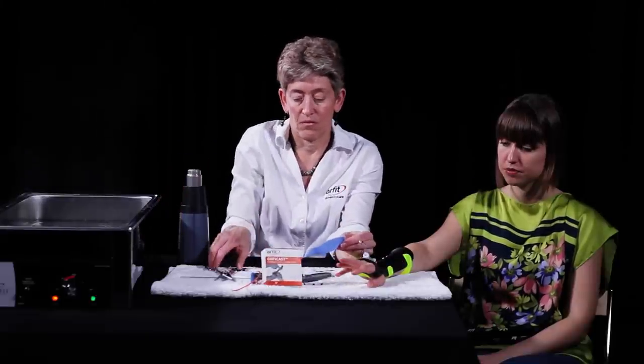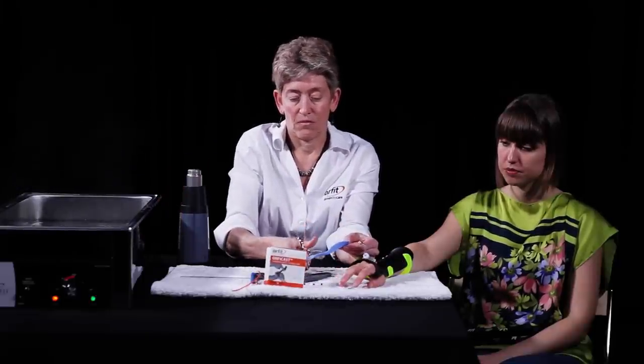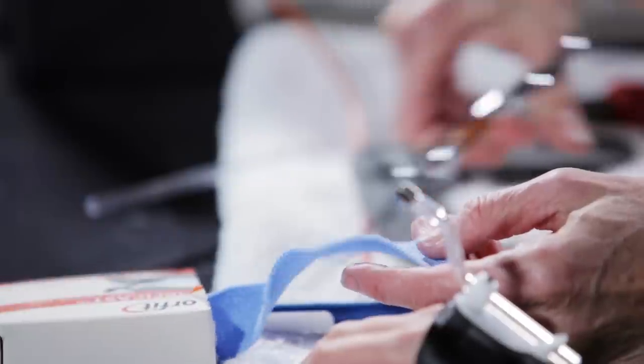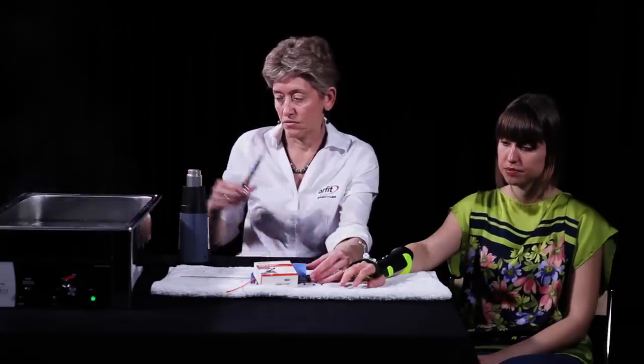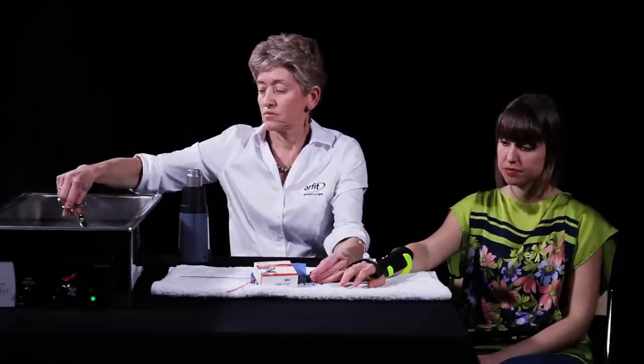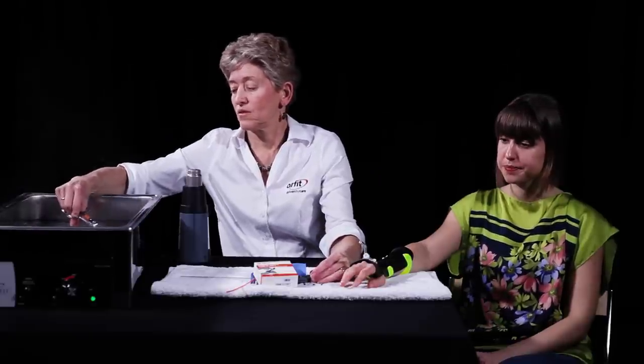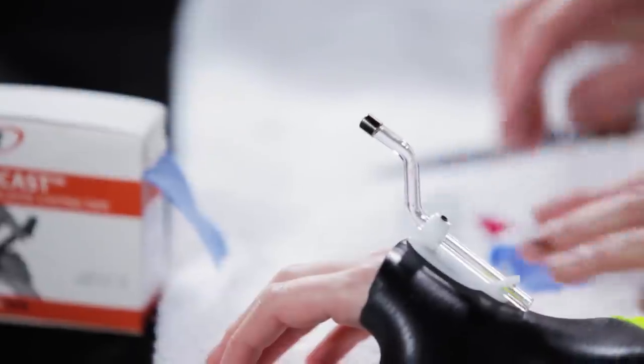OrphiCast will be used to make the finger cuff. Cut a piece of OrphiCast about 3 inches long. Heat up the OrphiCast in the splint pan to activate. Remove and dry briefly.